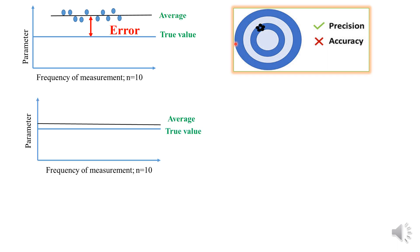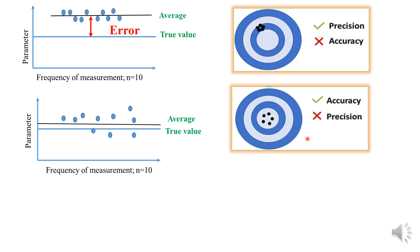In the next graph, 10 observations are again taken for a particular parameter and their average is calculated as the true value. When the same test is performed in our laboratory, the values obtained are close to the true value, though not identical — the new average is close to but not the same as the true value. Such a performance is known as accurate because it is close to the true value; however, it is not repeatable, so it is not precise. This result is accurate but not precise.